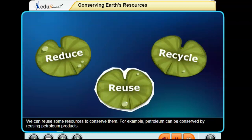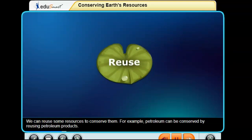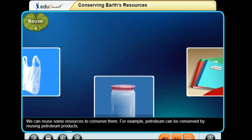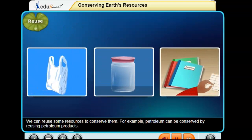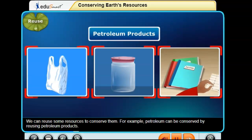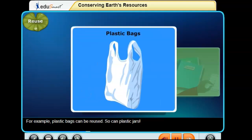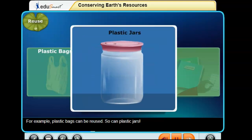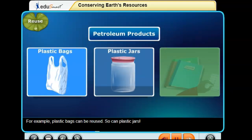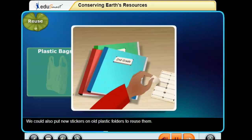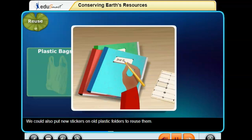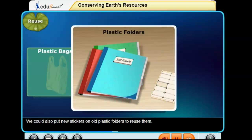We can reuse some resources to conserve them. For example, petroleum can be conserved by reusing petroleum products. Plastic bags can be reused, and so can plastic jars. We could also put new stickers on old plastic folders to reuse them.